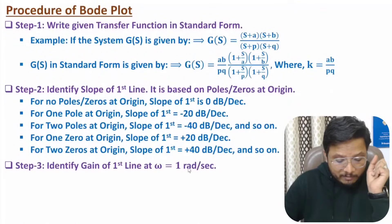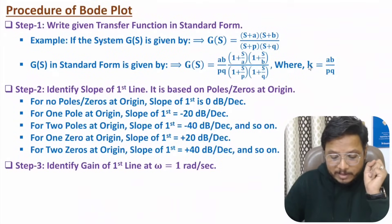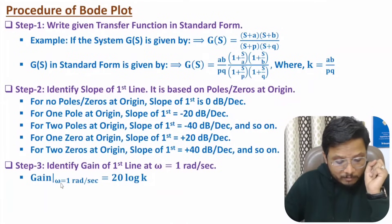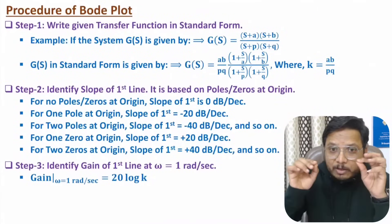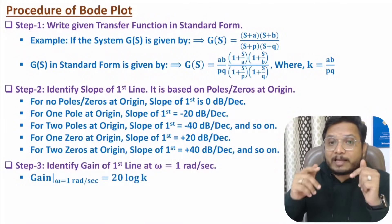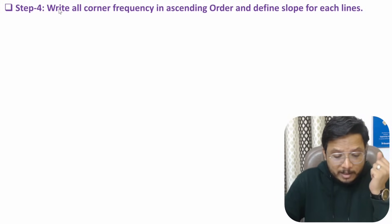In the next step, identify the gain of the first line at ω = 1 radian/second. After representing the system in standard form, you will have a constant k, and the gain at ω = 1 rad/s is 20·log(k) dB. Once you have this point and the slope of the first line, you can draw the first line of the gain plot and then identify slopes at other corner frequencies.